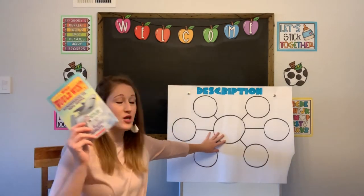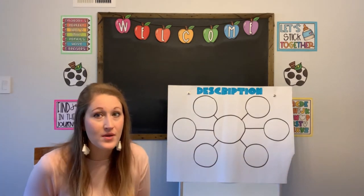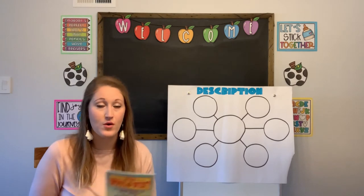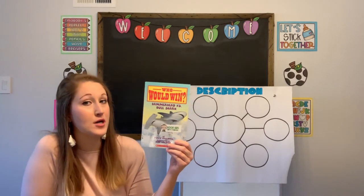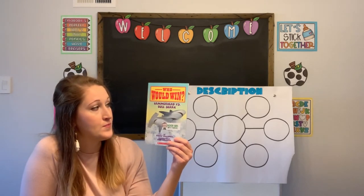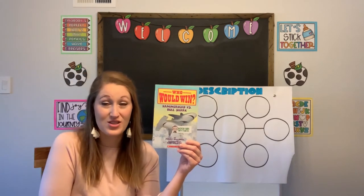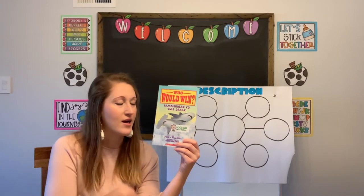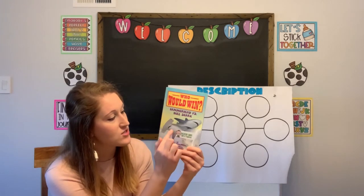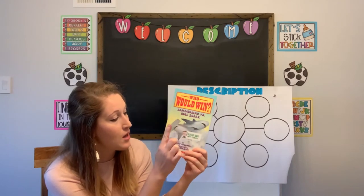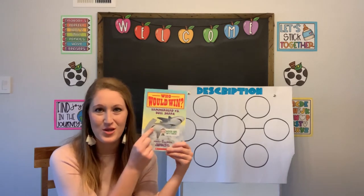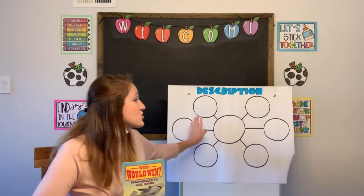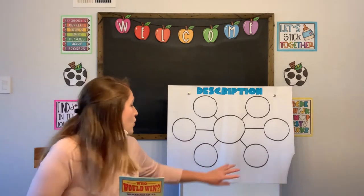We only have one description chart to work on today — if you really wanted to be an expert, you could make one for each animal. Since we're focusing on one, let's pick one shark. We landed on the hammerhead shark. So that is who we're going to focus on today, and we'll put hammerhead shark right here in the center circle — that tells us the main topic.